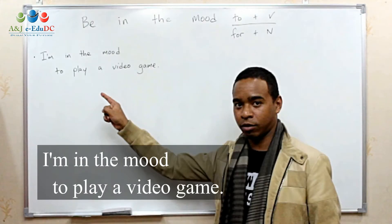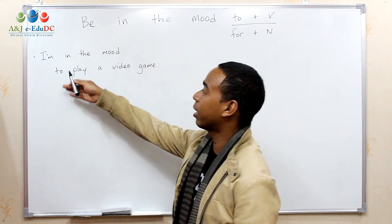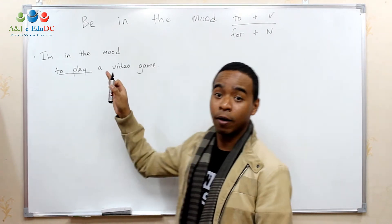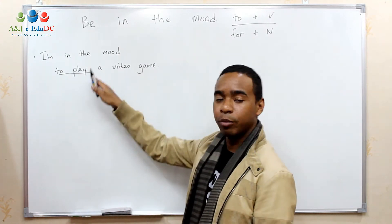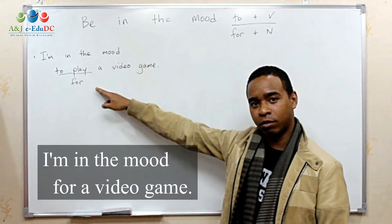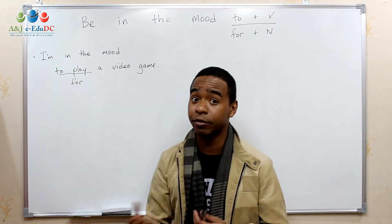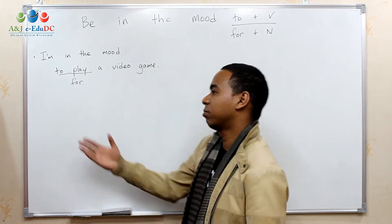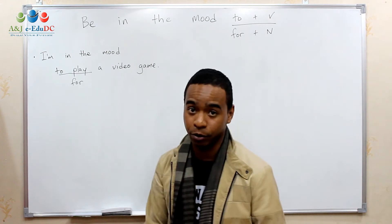For example: I'm in the mood to play a video game. Notice that I put 'I'm in the mood to play' — the basic verb, the infinitive. Or you can say 'for a video game.' It's not as specific as saying 'to play a video game,' because other people would interpret it in different ways, but most people would get the point — you want to play a video game.